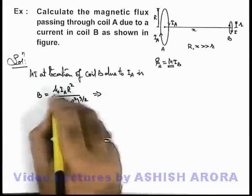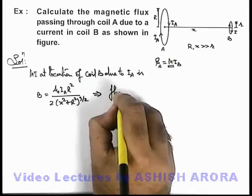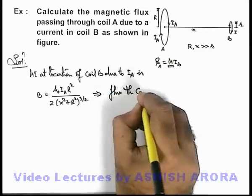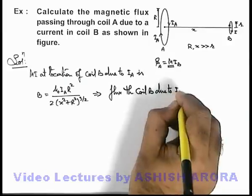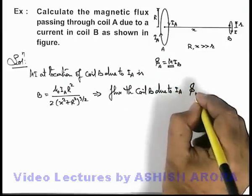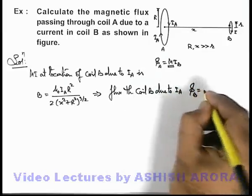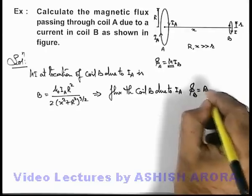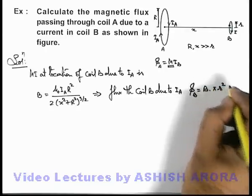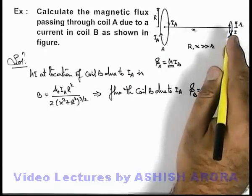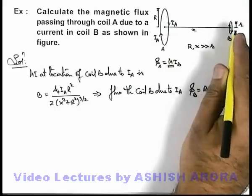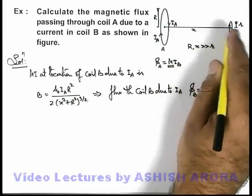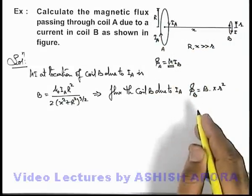Now using this magnetic induction we can calculate the flux through coil B due to i_A. This flux through coil B we can write as the magnetic induction multiplied by πr² which is the area of the second coil. As it is given that the radius of second coil is very small, we can consider its magnetic induction almost remains uniform throughout the cross-section.